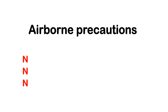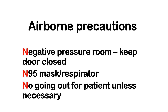What are airborne precautions? All beginning with the letter N. N is for negative pressure room — that's where you keep the patient, and keep the door closed. N is for N95 mask or respirator — that is what you use when you enter the patient's room. N is no going out for the patient unless necessary. If the patient has to go out, let the patient wear a surgical mask.